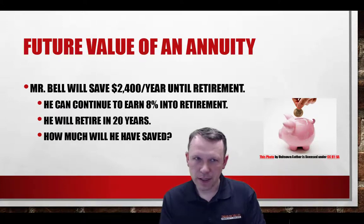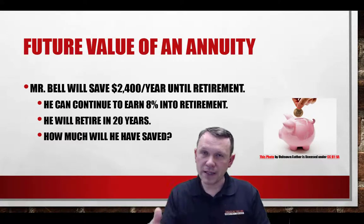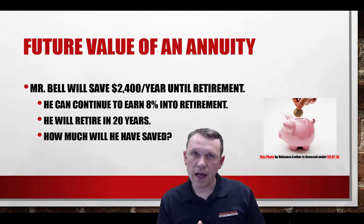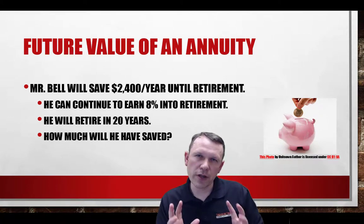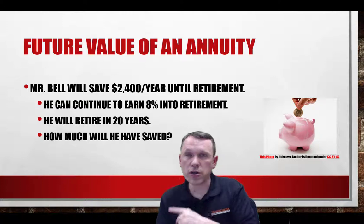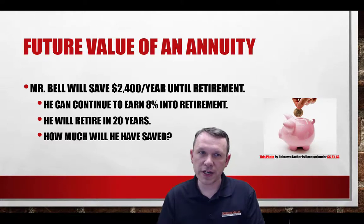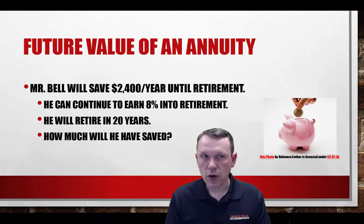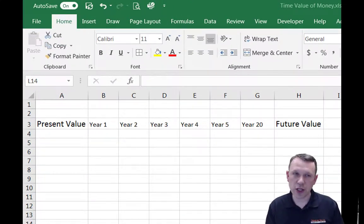For the future value of an annuity, consider this scenario: I'm going to invest $2,400 a year until I retire, earning 8% on my investments, for 20 years. How much will I have saved at the end of 20 years? The key insight with annuities is that the $2,400 saved in year one has much more time for interest to work on it than the $2,400 saved the year before retirement.